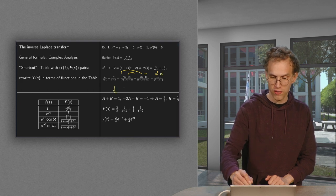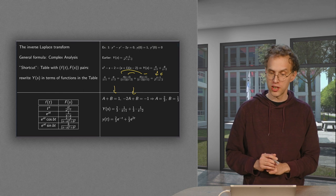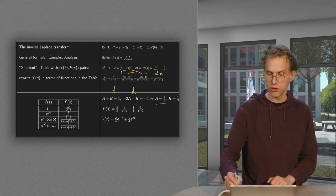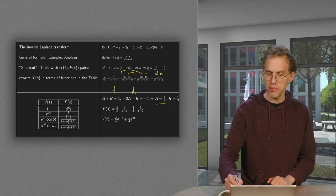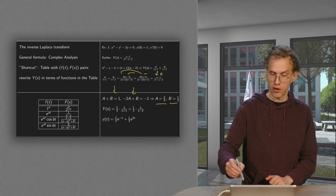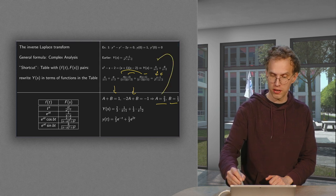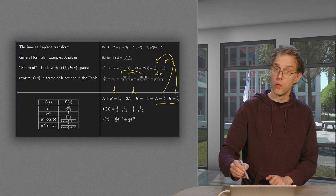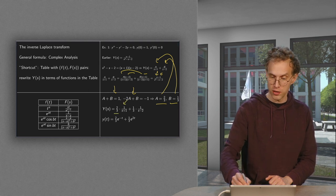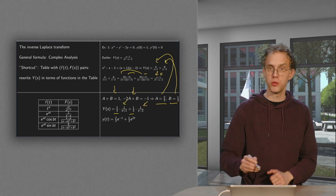So we have two equations here with two unknowns. And solving for A and B we find A equals 2 over 3 and B equals 1 over 3. So this yields our y-bar(s). You can plug them in over here. So y-bar(s) equals 2 over 3 times 1 over s plus 1 plus 1 over 3 times 1 over s minus 2.